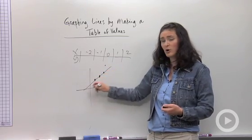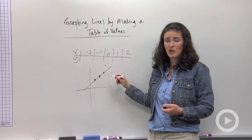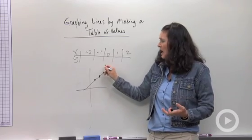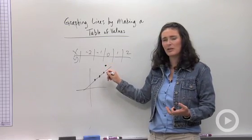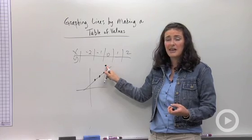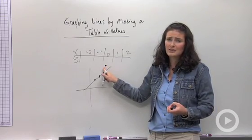If I got three that are perfectly lined up, they're ruler straight and I used a ruler to draw them, and I have this point that's just like a little bit off, chances are I made an error in my table. So go back to your table and make corrections.